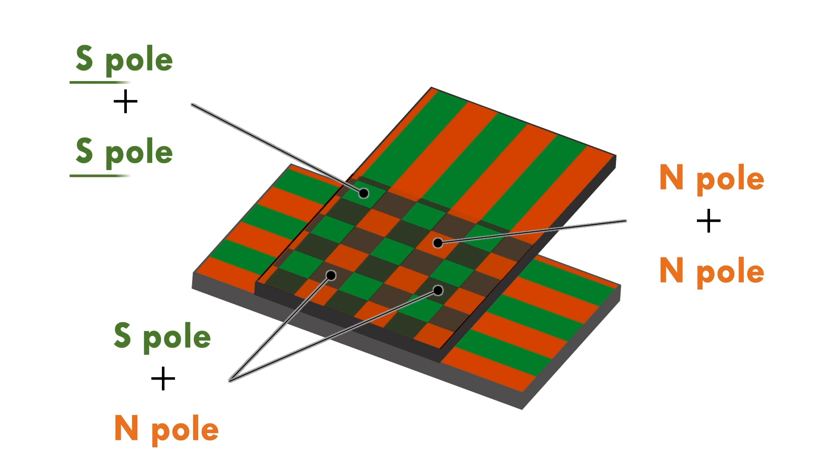An area where two S poles are overlapped, an area where two N poles are overlapped, and the magnetic weakened area where the S poles and N poles are overlapped.